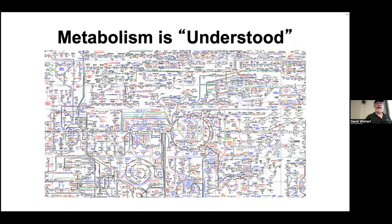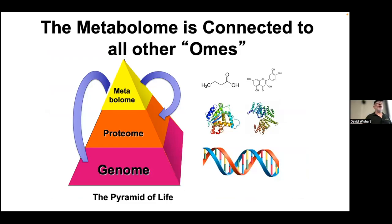People often don't realize that metabolism is fundamentally well understood. The KEGG metabolism pathway chart, which was drawn in the 1960s and is still used today, shows hundreds of reactions, hundreds of enzymes, and thousands of metabolites — all known decades ago. We understand metabolism to a higher degree than almost any other biological process. The metabolome is also connected to all other 'omes': the proteome is connected to the genome. Metabolites will bind to your DNA, DNA produces proteins that produce metabolites, and there are connections between small molecules, genes, and proteins — true in bacteria and true in humans.